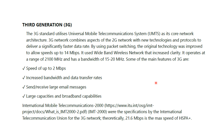In the third generation, it utilizes UMTS — Universal Mobile Telecommunication System — as its core network. It combines aspects of 2G networks with new technologies and protocols to deliver a significantly faster data rate. By using packet switching, the original technology was improved up to 14 megabits per second.